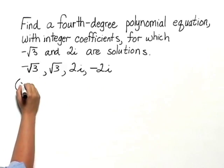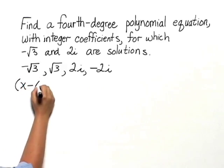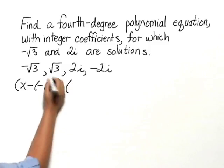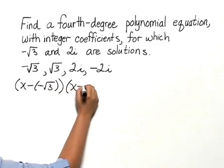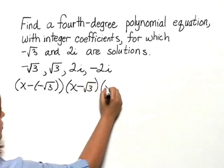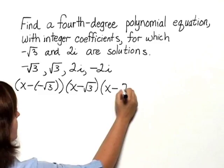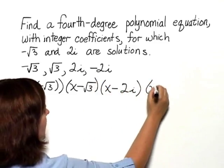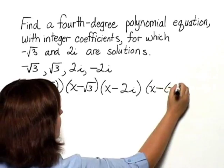Negative square root of 3 would correspond to x minus negative square root of 3. Square root of 3 would correspond to x minus the square root of 3. 2i would correspond to x minus 2i. And negative 2i would correspond to x minus negative 2i.